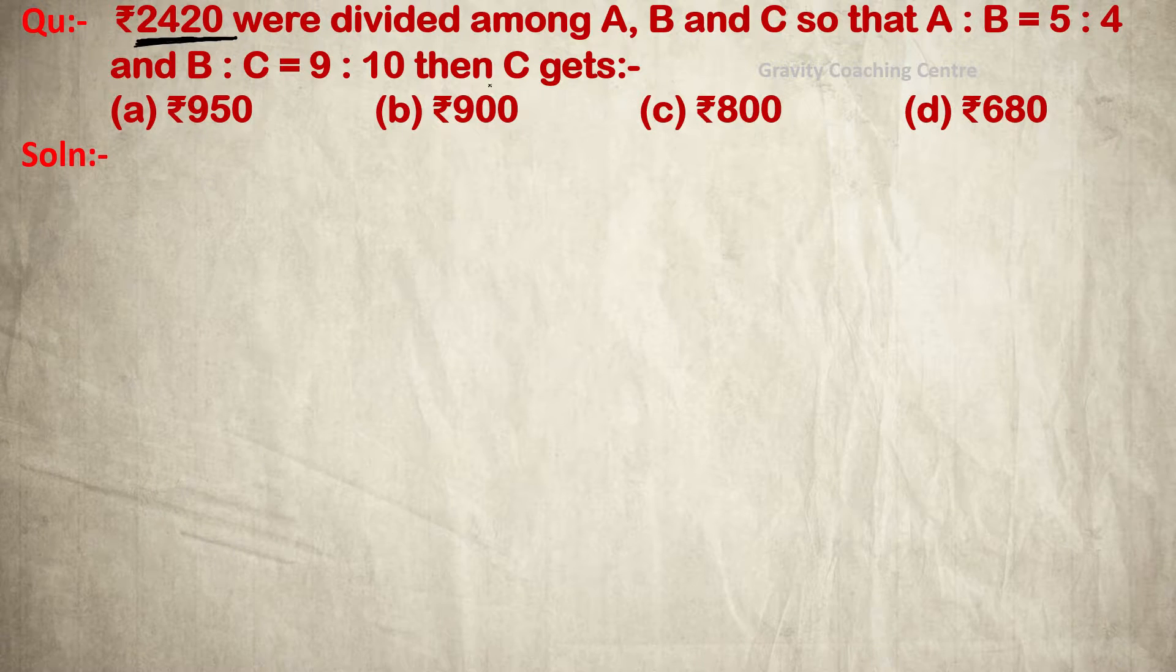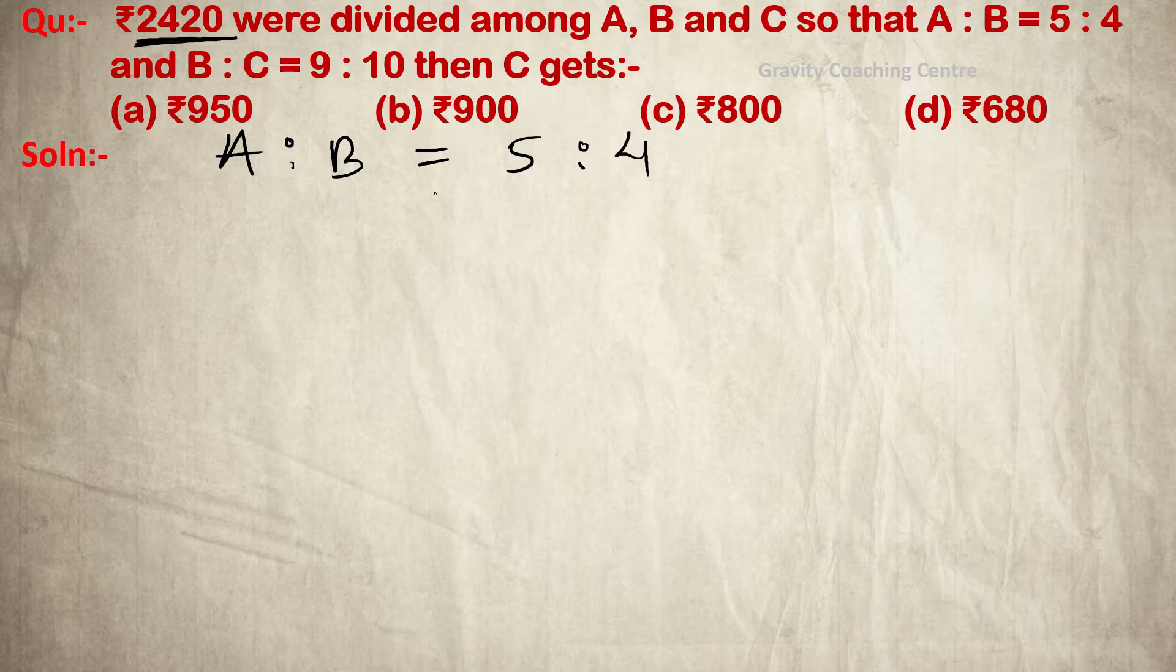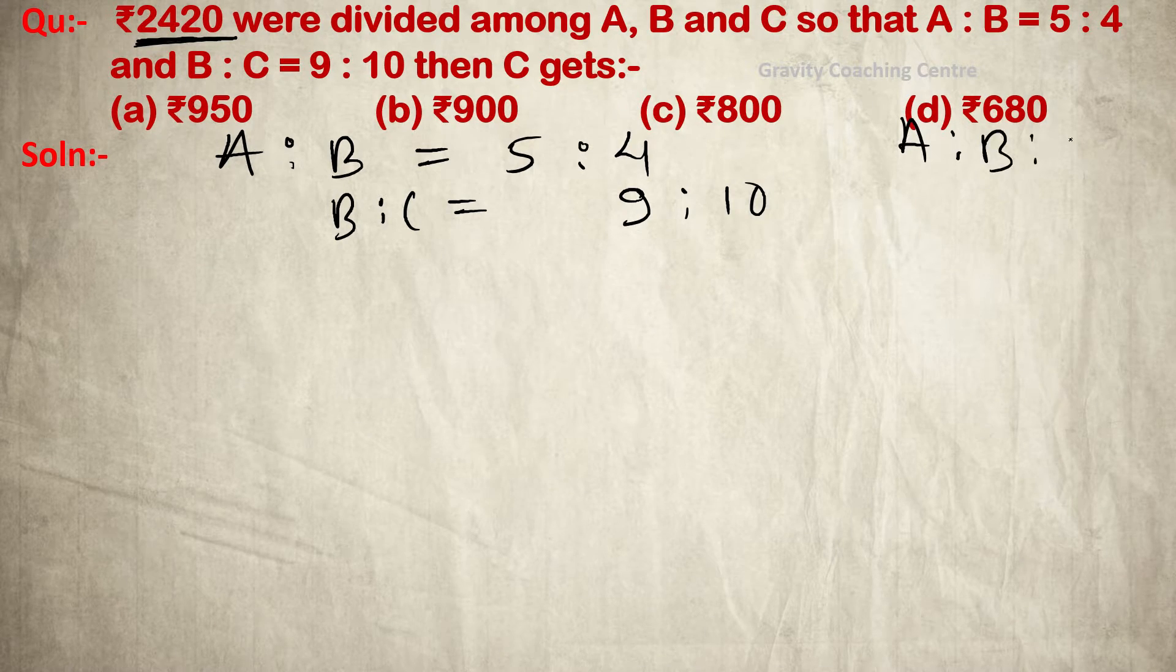The ratios given are A:B = 5:4 and B:C = 9:10. So first we have to find A:B:C, the combined ratio.